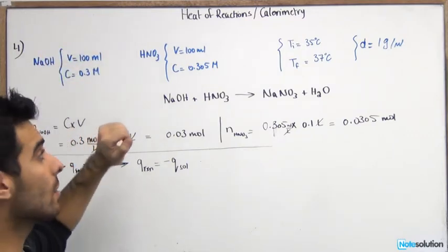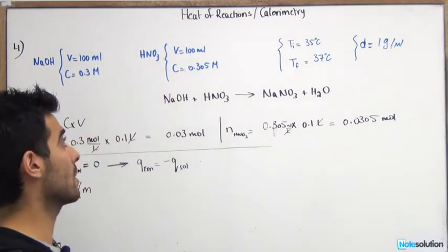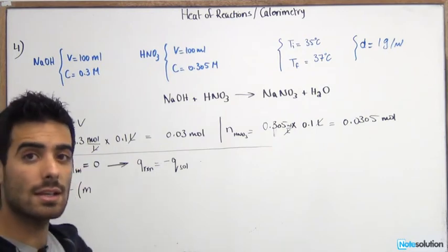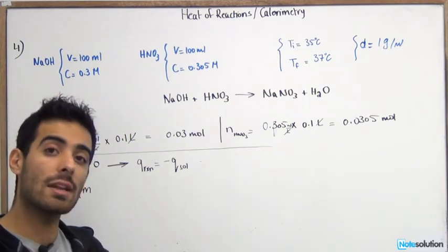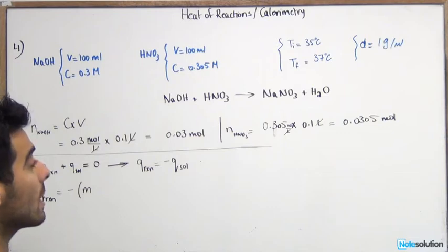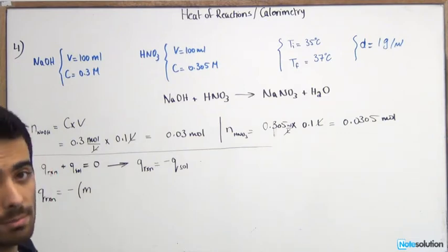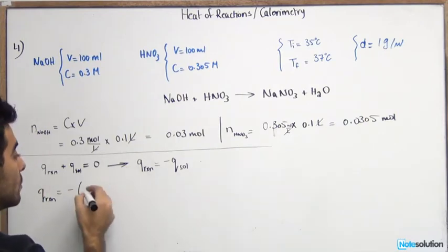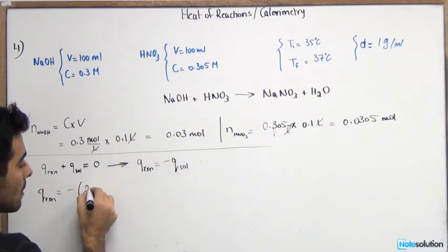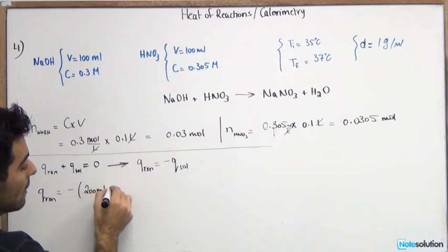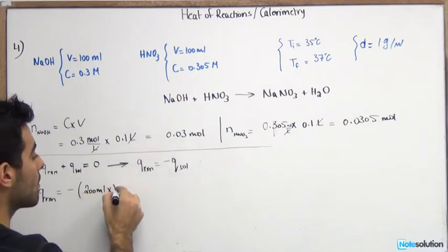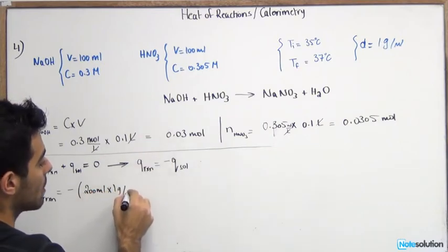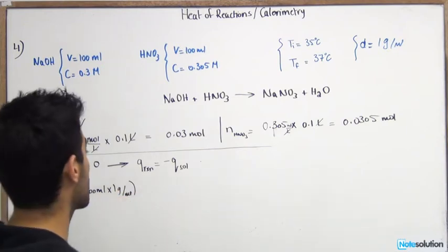So now you should add the volumes together. You have 100 mL of NaOH and 100 mL of HNO3. You need to add this volume together because you're adding both mixtures together, so you're going to have a total of 200 mL. So now you can go ahead and switch up the mass, so you have 200 mL times one gram per milliliter, that would give you 200 grams.